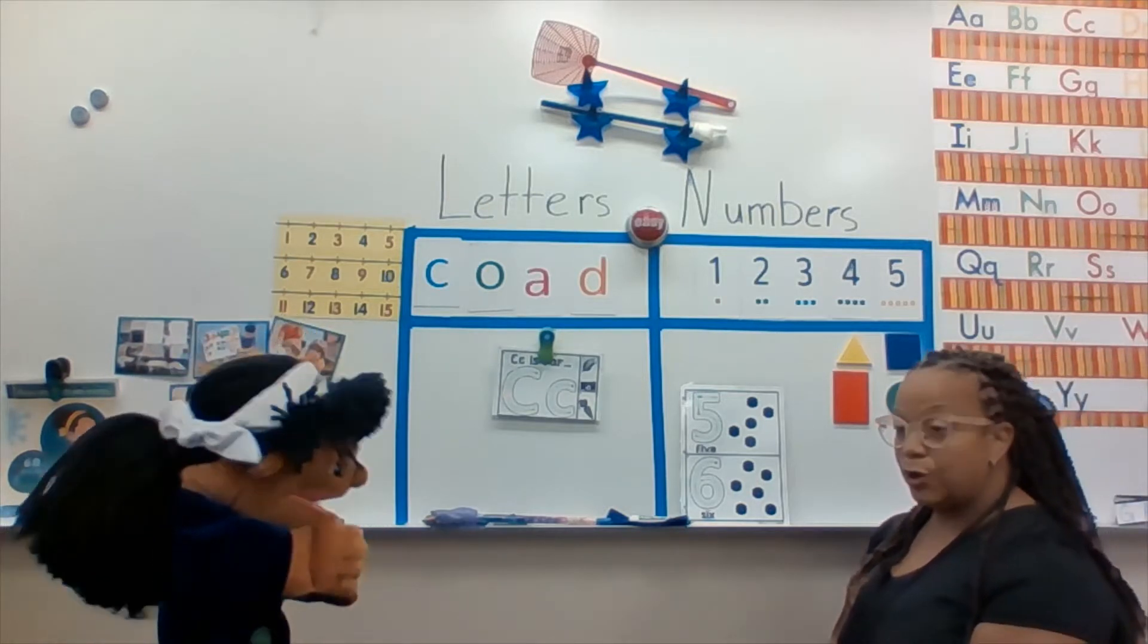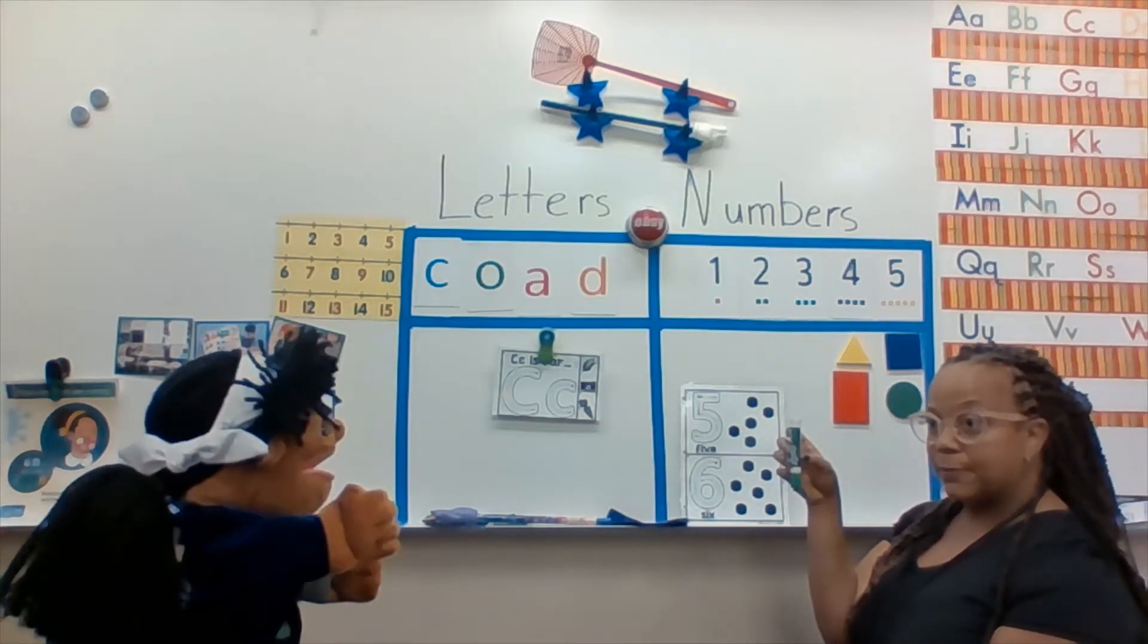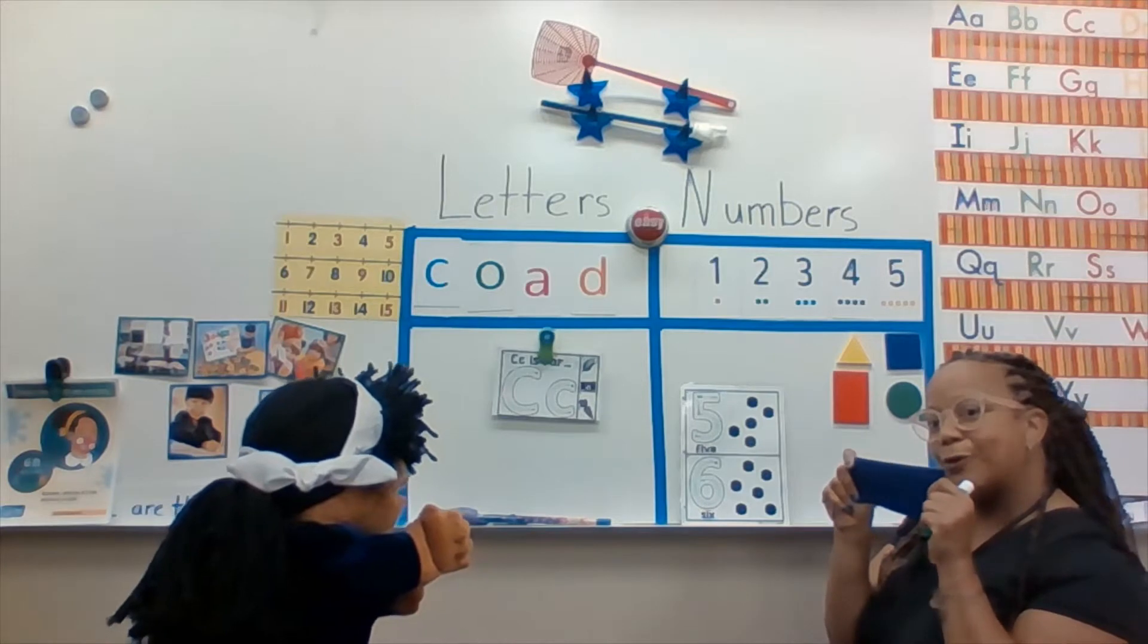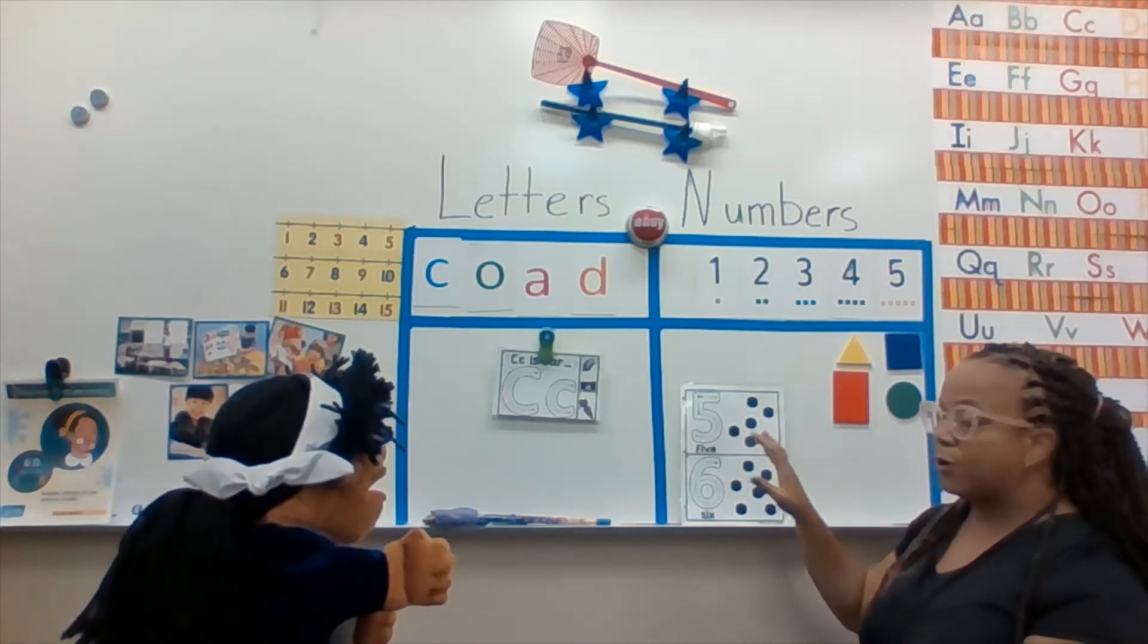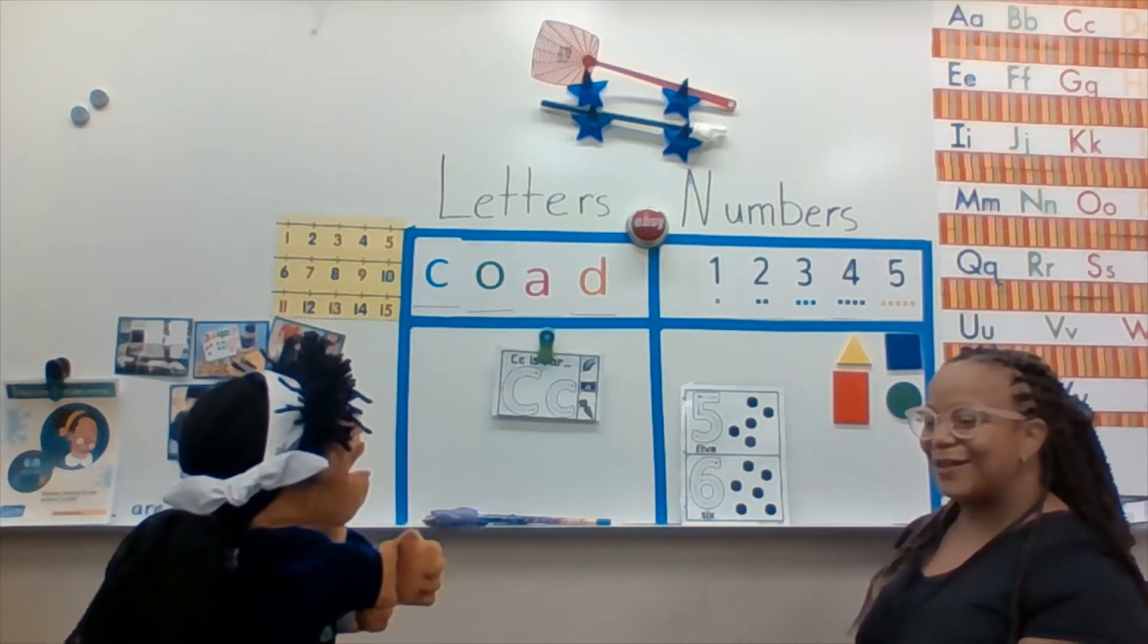The materials that we need in order to count are our marker, and our felt eraser. We also need our number card. Which number card? The number five card, Jacob.